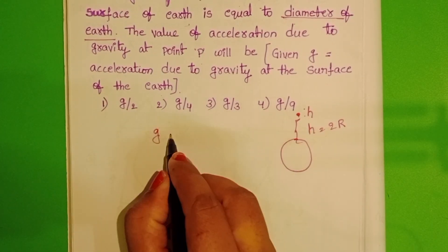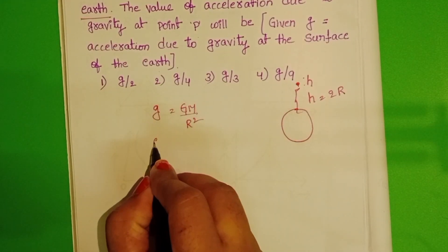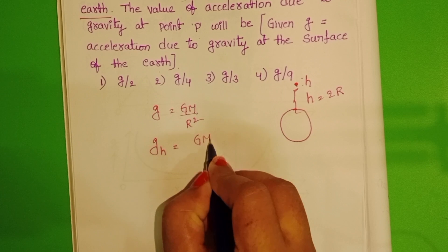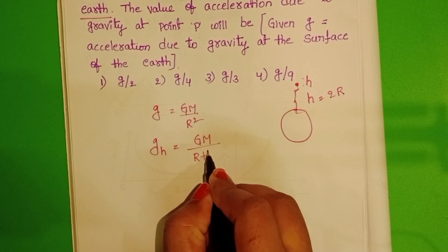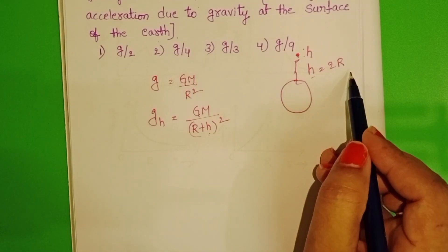We know g equals GM/R². At the given height, acceleration due to gravity gh equals GM/(R+h)². Here we know h equals 2R.